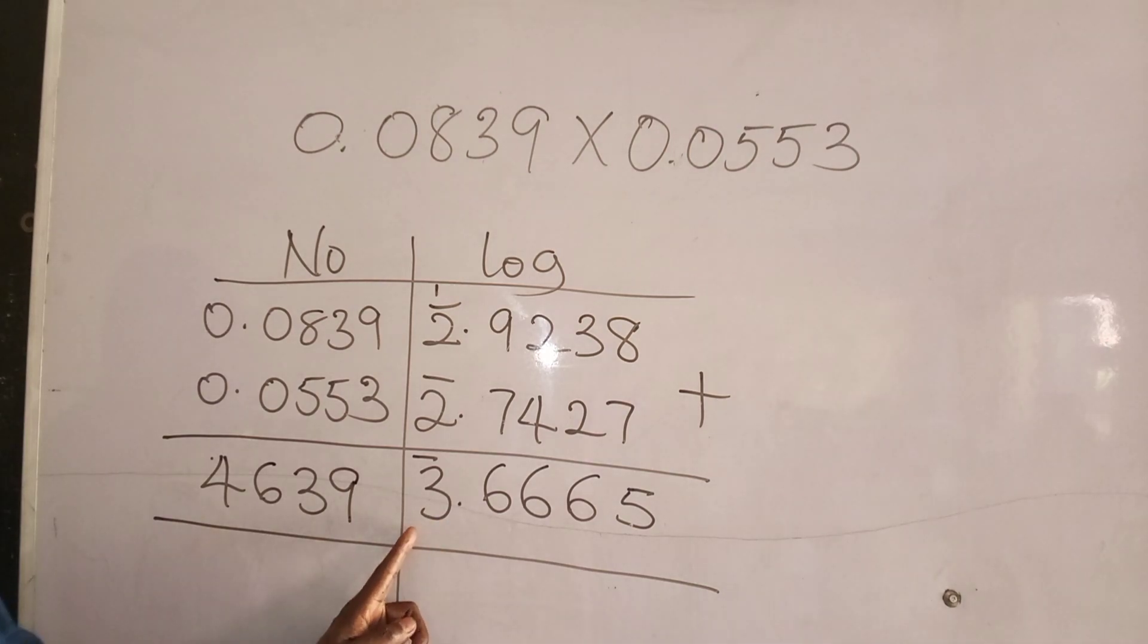Now because it is bar, we are going to have what? 0.004639. This is the value for this.